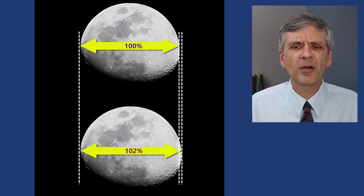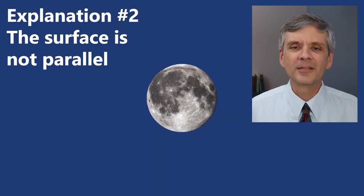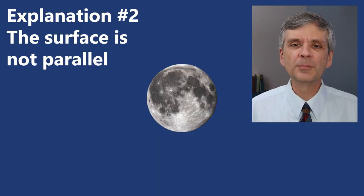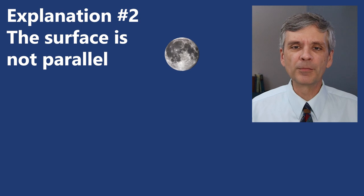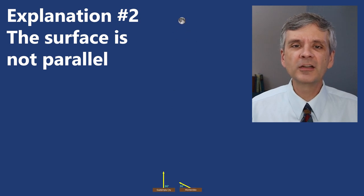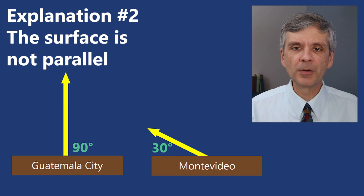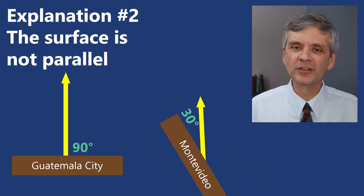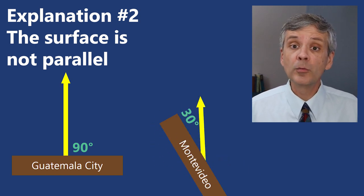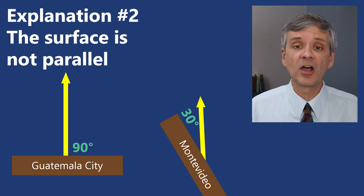Or that there's something else somehow causing it to appear the same size. The second possible explanation is that the moon actually is about the same distance from both places, and that the reason it appears at two different angles is not because of distance, but because the ground itself is tilted differently in both of those cities, which would mean that the surface of the earth is not flat.